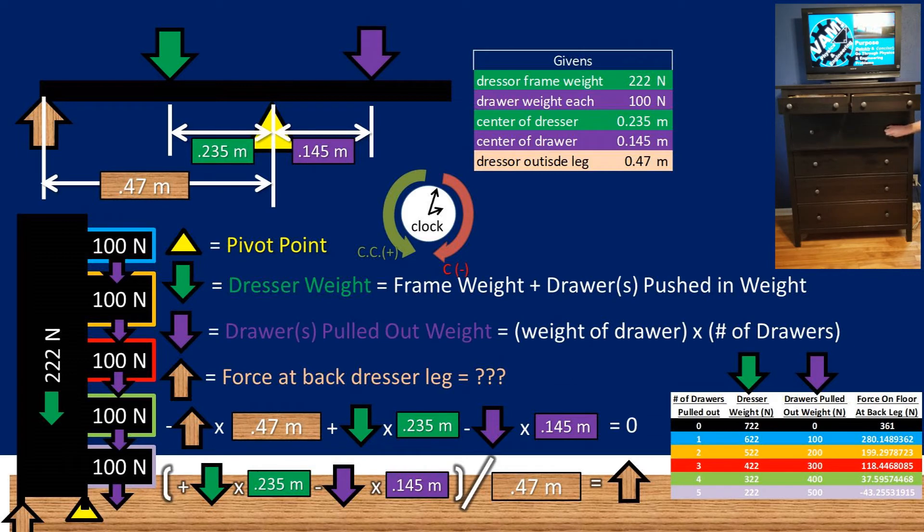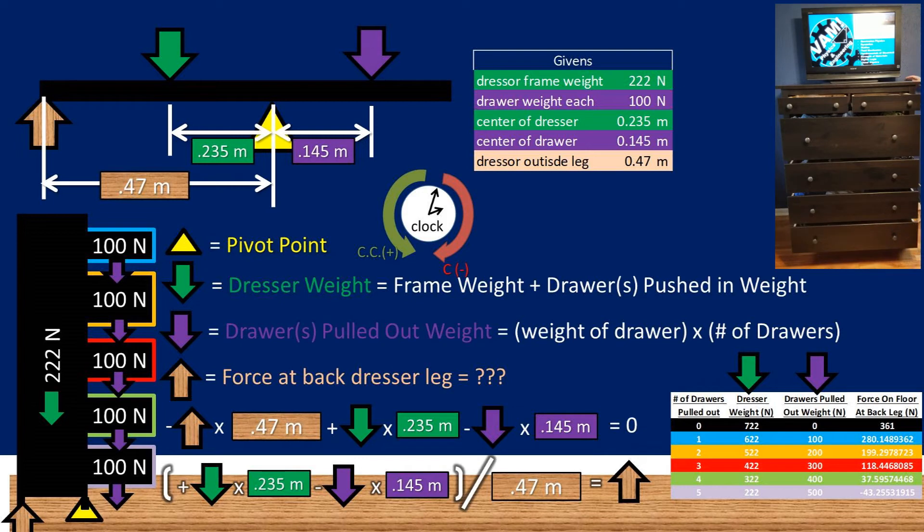Now instead of calculating this all out by hand, I decided to use Excel instead. Doing so, we have the displayed table. If you are following along at home, you can use the above equations for the dresser weight and the pulled out drawer weight. You can then check your work using the table below.